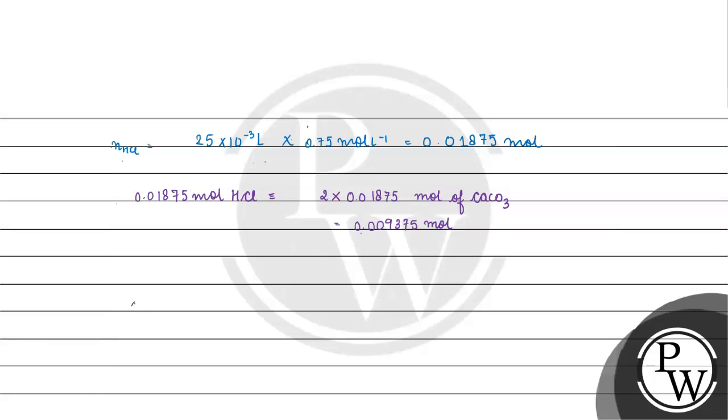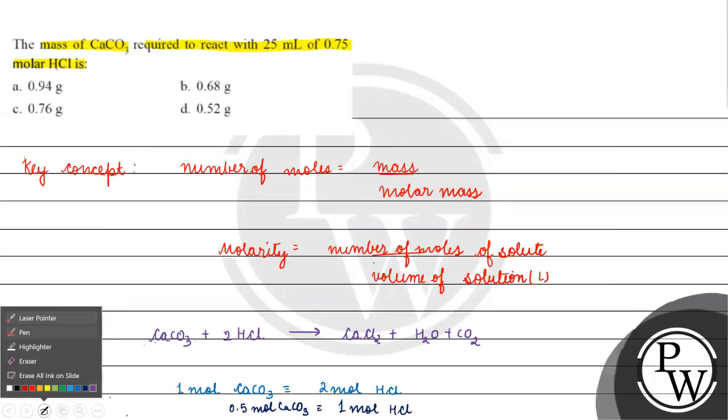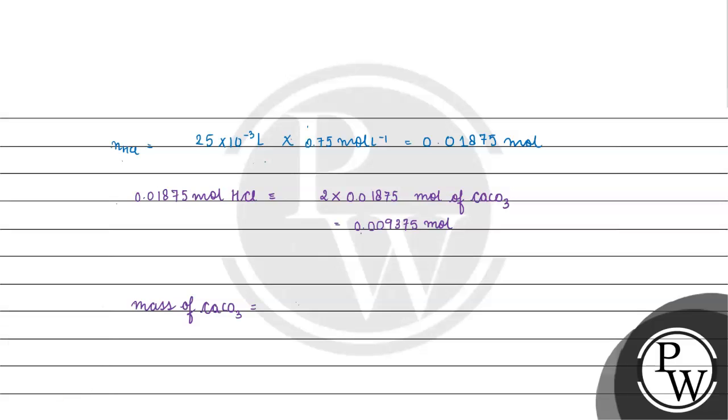If we have to take the mass of calcium carbonate, mass equals number of moles multiplied by molar mass. The molar mass of calcium carbonate will be 100 gram per mole. How come 100? Calcium atomic mass is 40, plus 12 which is atomic mass of carbon, plus 3 into 16 which is 48. 52 plus 48 equals 100. We will multiply it by the number of moles.